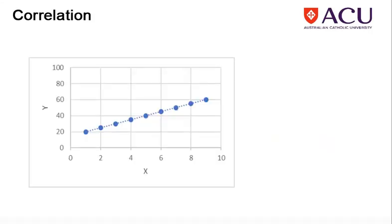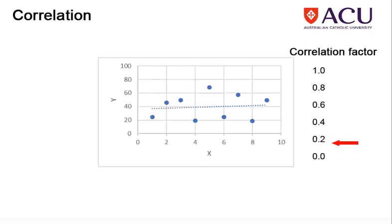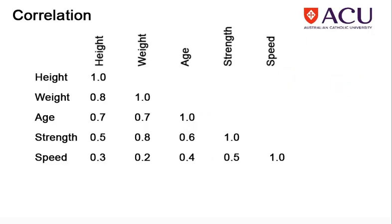In exploratory analysis we are looking for relationships between variables that may indicate cause and effect. Correlation factors can be used to show these relationships. Correlation matrices are triangular tables which explore many such relationships in a compact form.